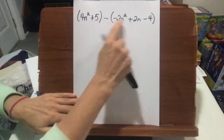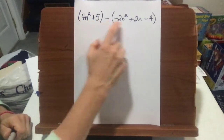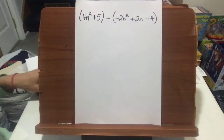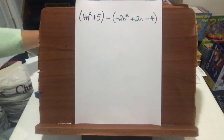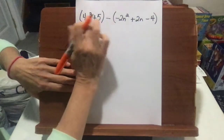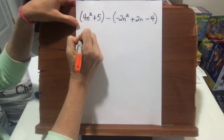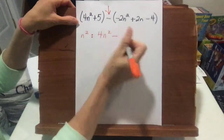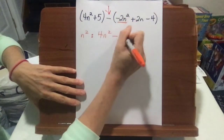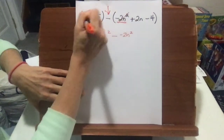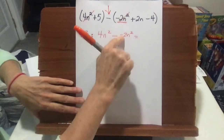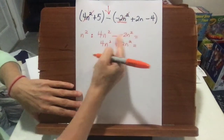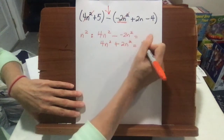Now we're going to subtract groups. We have the group 4n squared plus 5 minus everything in this group — we're subtracting negative 2n squared plus 2n minus 4. You can use distributive property or just follow the subtraction. We've got n squared terms, number terms, and n terms. Starting with n squared terms: 4n squared. We're going to subtract, and we're subtracting negative 2n squared. When we have a double negative — a minus a negative — that really is plus. So 4n squared plus 2n squared equals 6n squared.